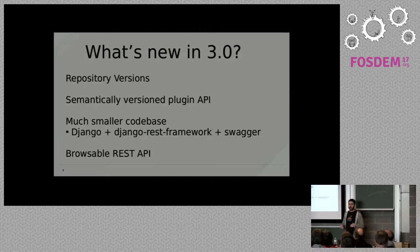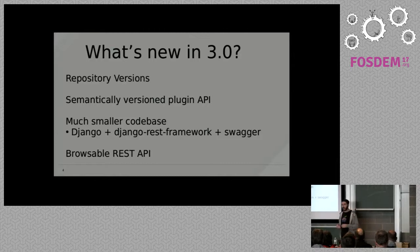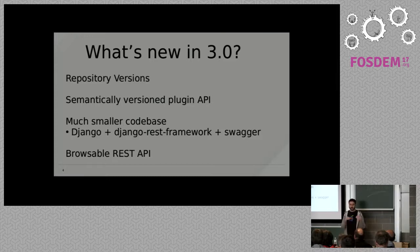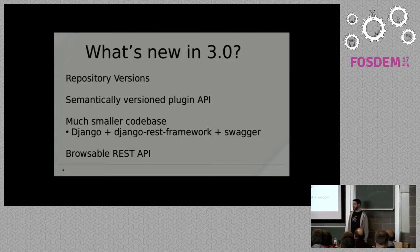We have also provided a very concrete plug-in API and it is semantically versioned. There is now a Pulp core plug-in package on PyPI that plugins can depend on, and they can know that as long as they're using a specific version of the plug-in API, their plugin is going to work.